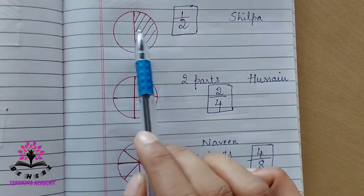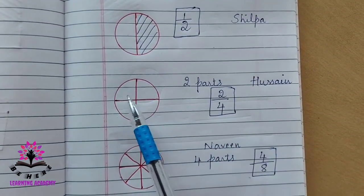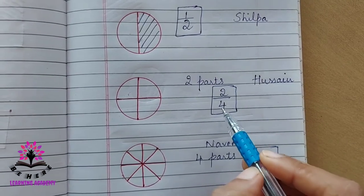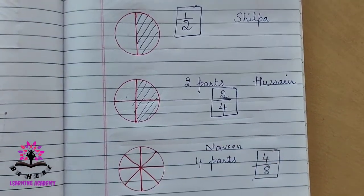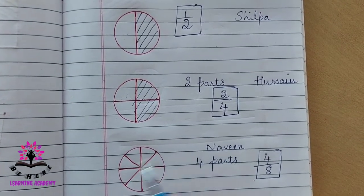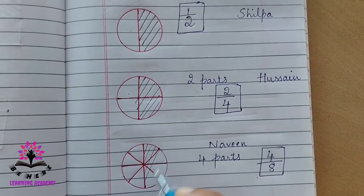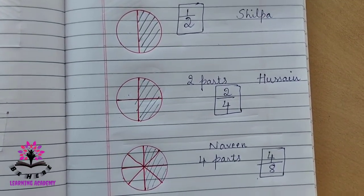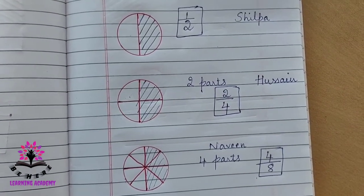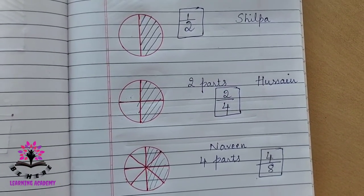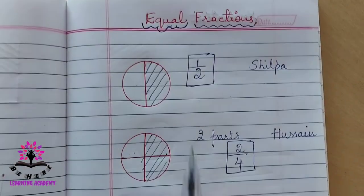Here, the whole is divided into two equal parts, one is taken by Shilpa. Here, out of four, he will eat two parts — you see, half is remaining. Here there are eight parts, he will eat one, two, three, four — that means each represents half of the whole. So fractions showing same quantity are called as equal fractions.